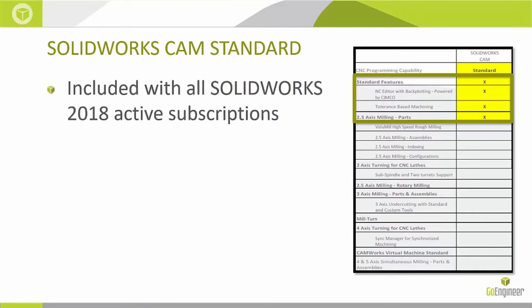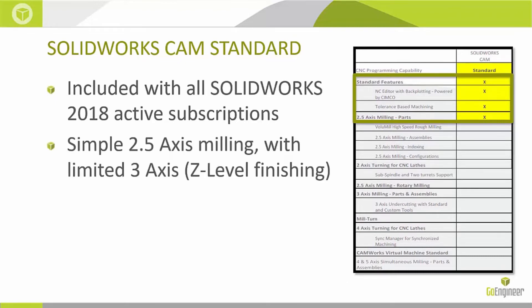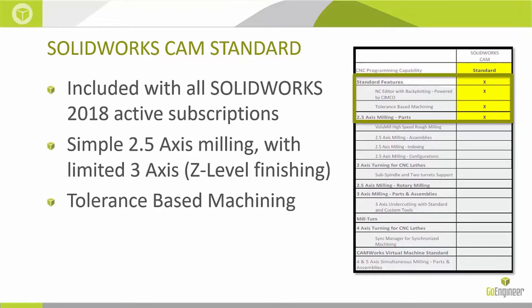Starting with SOLIDWORKS CAM Standard — this is the included CAM package for SOLIDWORKS 2018 active subscription customers, and it's what they have access to. It's essentially simple two and a half axis milling with limited three axis, which in this case means Z-level finishing. We also have tolerance-based machining, where with MBD (model-based definition), parts of toolpaths and strategies can be automated or driven by the tolerance values associated with the part. You also get the NC editor — a numerical control editor, basically an advanced word pad editor for editing G-code after it's output from SOLIDWORKS CAMWorks.